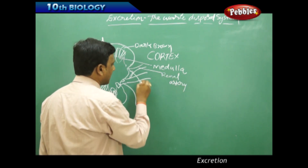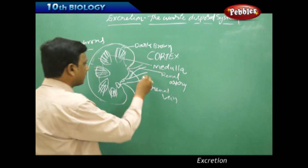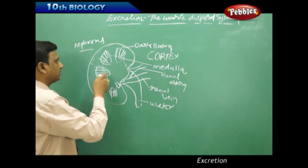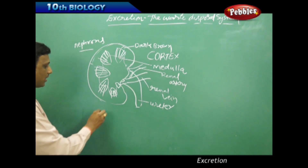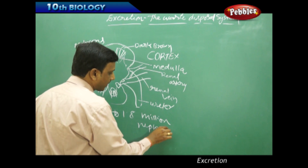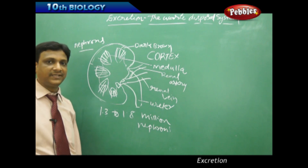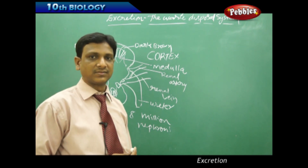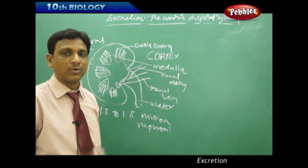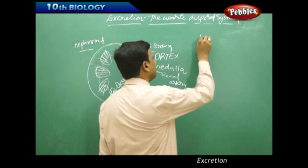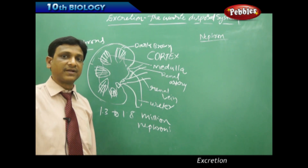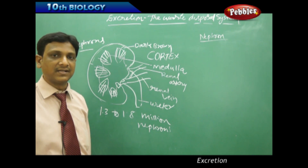The renal artery and renal vein are connected to the kidney, and the ureter sends the generated urine out. Each kidney has 1.3 to 1.8 million nephrons. This is the internal structure of the kidney. To understand the mechanism of filtration or excretion in the kidneys, we need to study in further detail the functional unit — the nephron — including its different parts and the functions performed by each part, so we can clearly understand the filtration process.